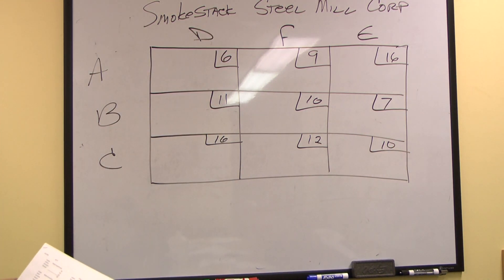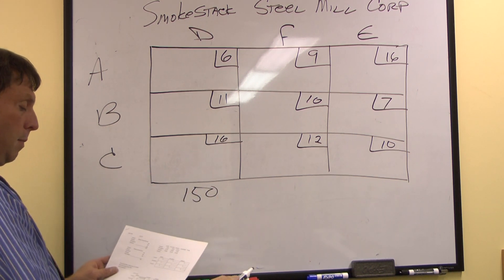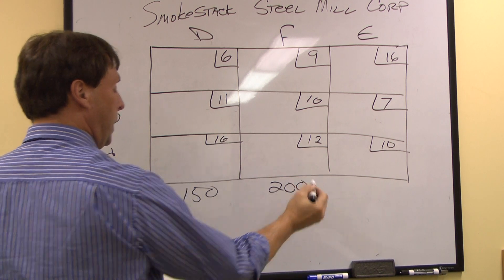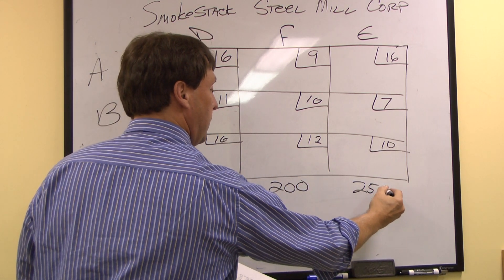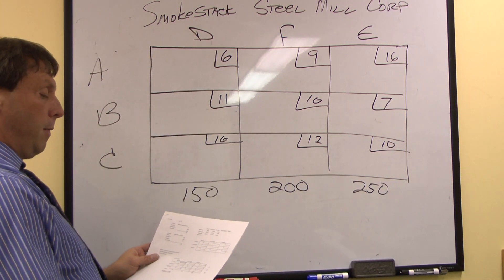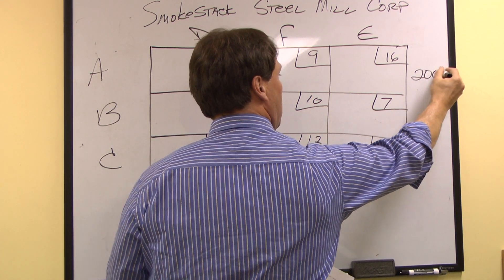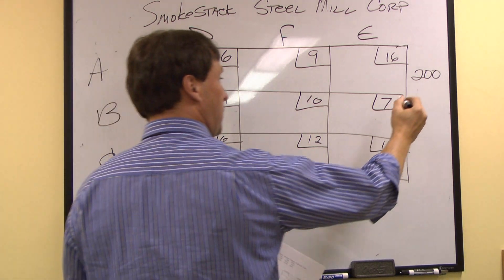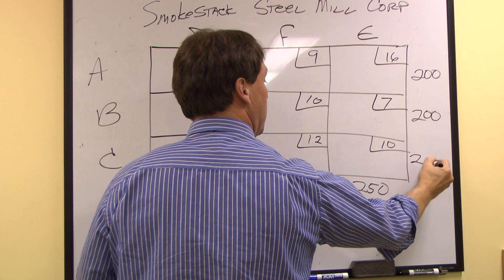That's the shipping costs. Now, demand from Detroit is 150 units, demand from Fort Worth is 200 units, and demand from Elizabeth is 250 units. Supply from Anaheim is 200, supply from Birmingham is 200, and supply from Cleveland is 200.